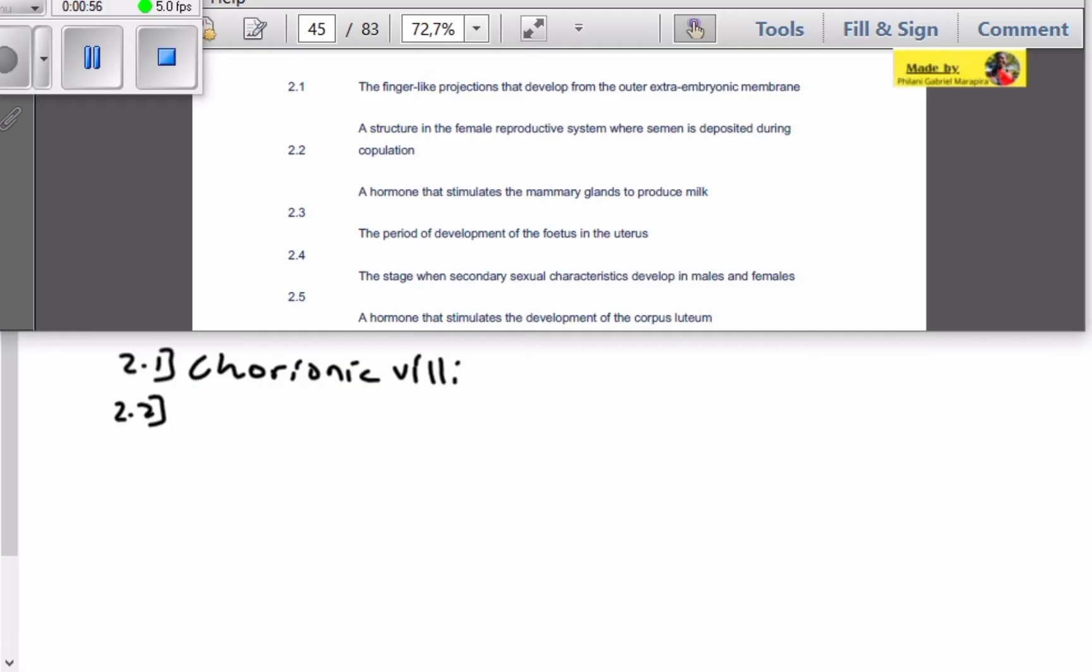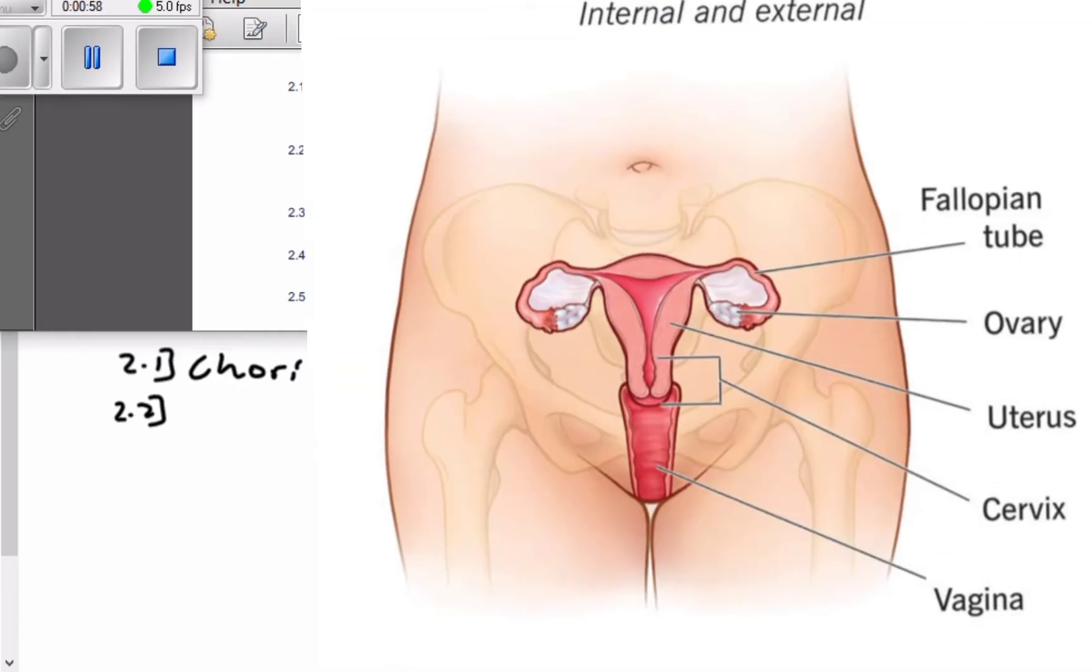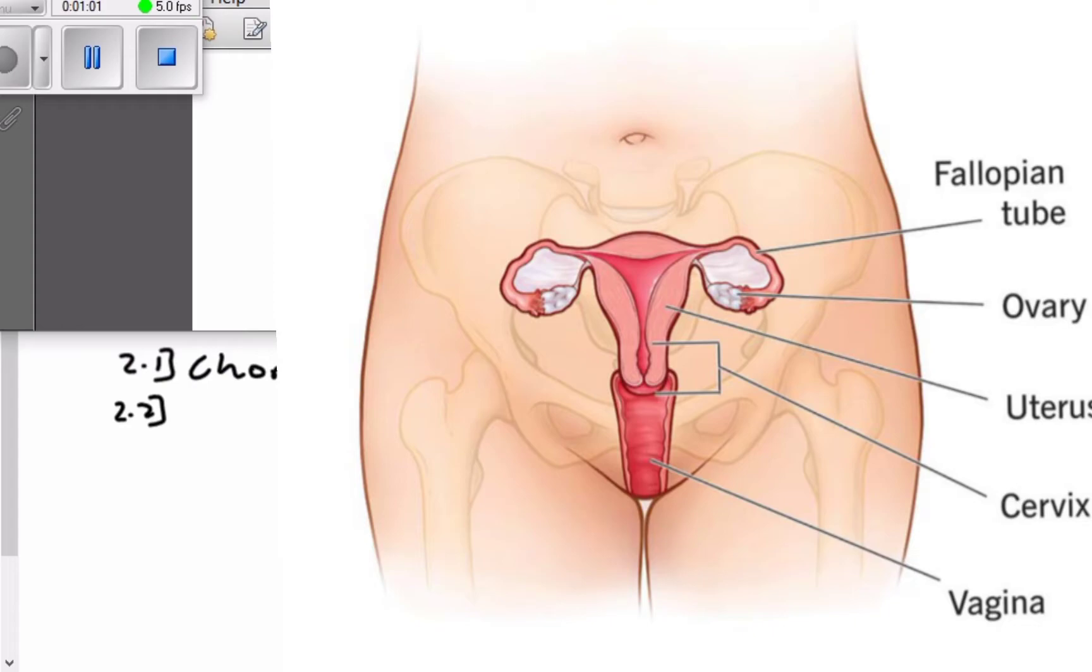We are looking for a structure in the female reproductive system where semen is deposited during copulation. Remember, copulation is the process whereby the penis enters the vagina. So here they're asking where will the sperm be deposited?